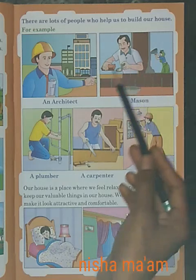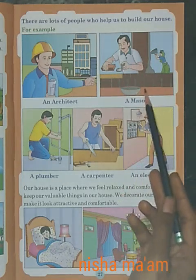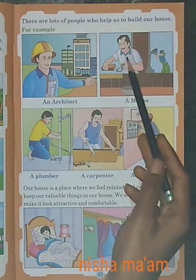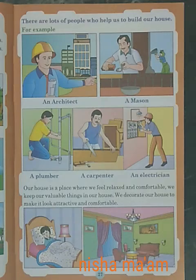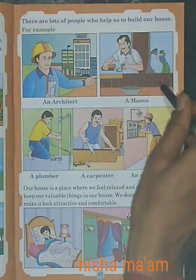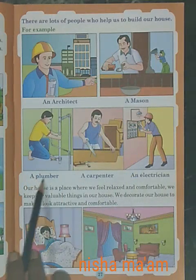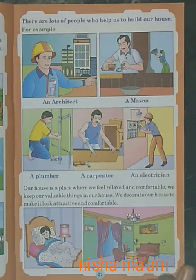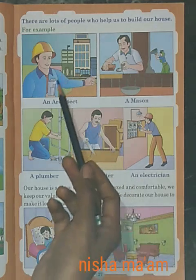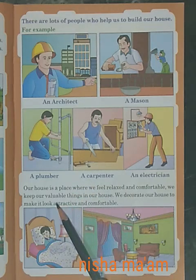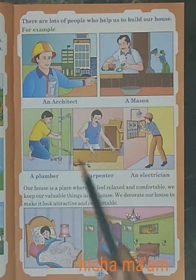Mason — mason means कड़िया, वो uncle इस तरह से ईंट और सीमेंट सब को mix करके दीवाल खड़ी करते हैं और यह सब बनाते हैं। Architect order करते हैं और mason work करते हैं। फिर वो आता है — plumber। Plumber क्यों चाहिए? क्योंकि हमें घर के अंदर पानी चाहिए, नल के अंदर पानी — वो plumber लगाएगा।